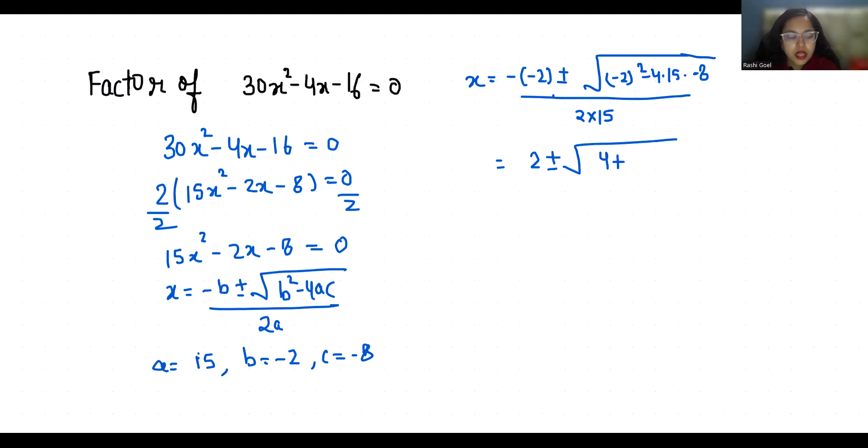So 2 ± √484 / 30. Since the square root of 484 is 22, we can write this as (2 ± 22) / 30.